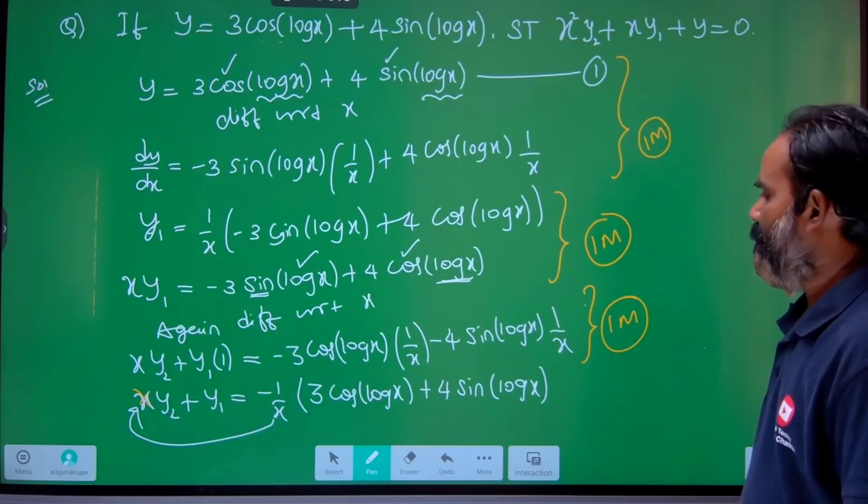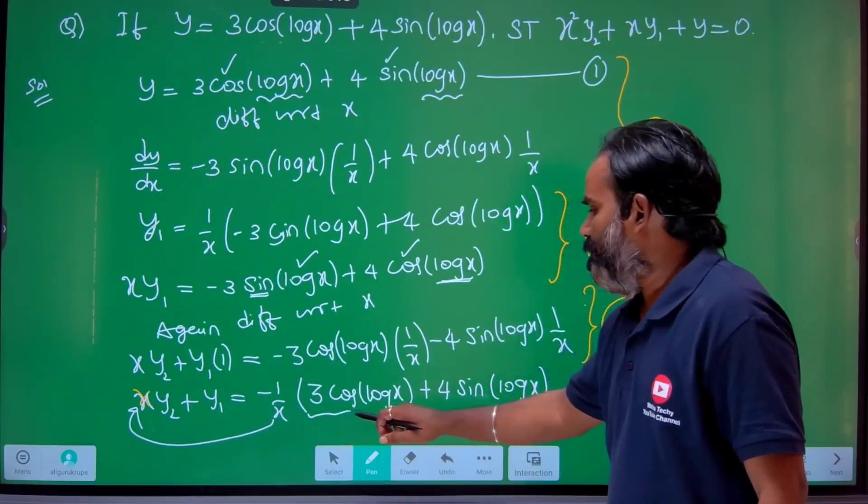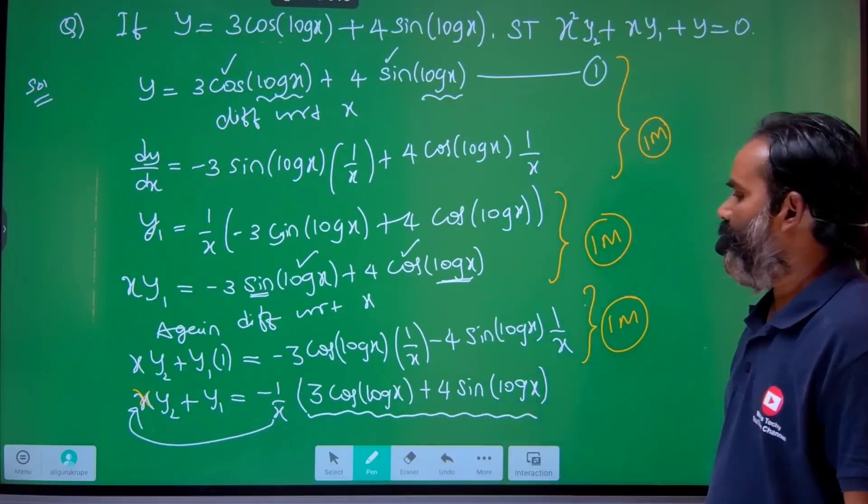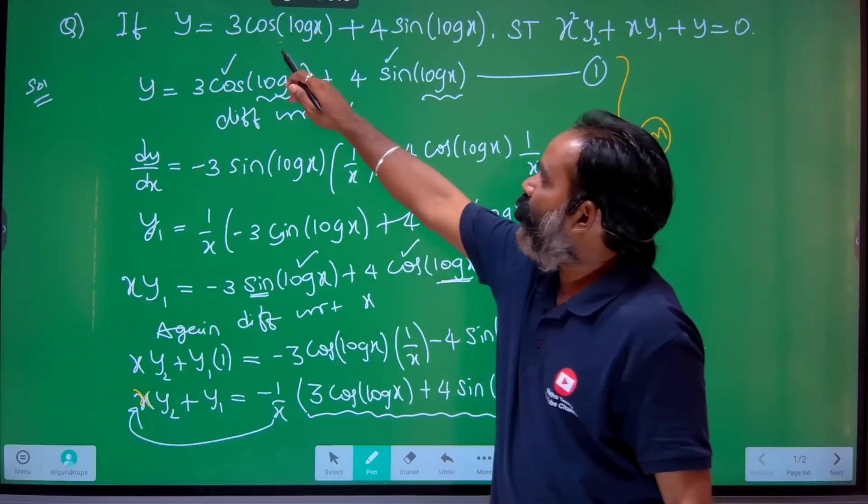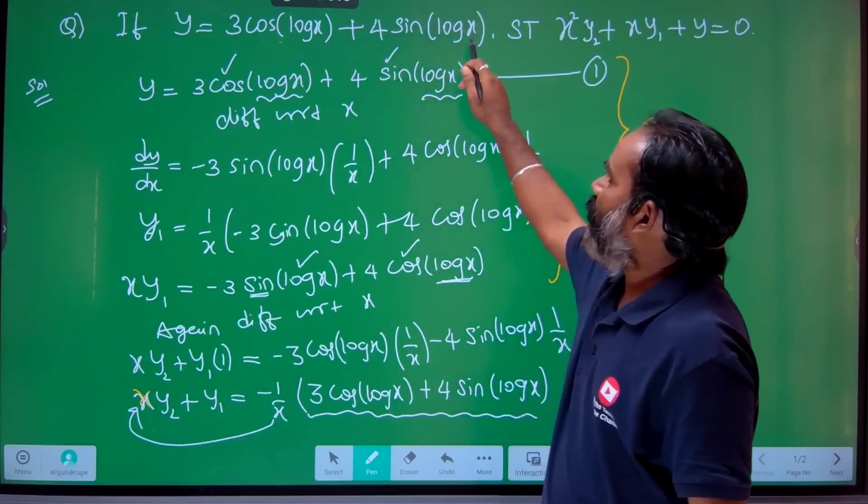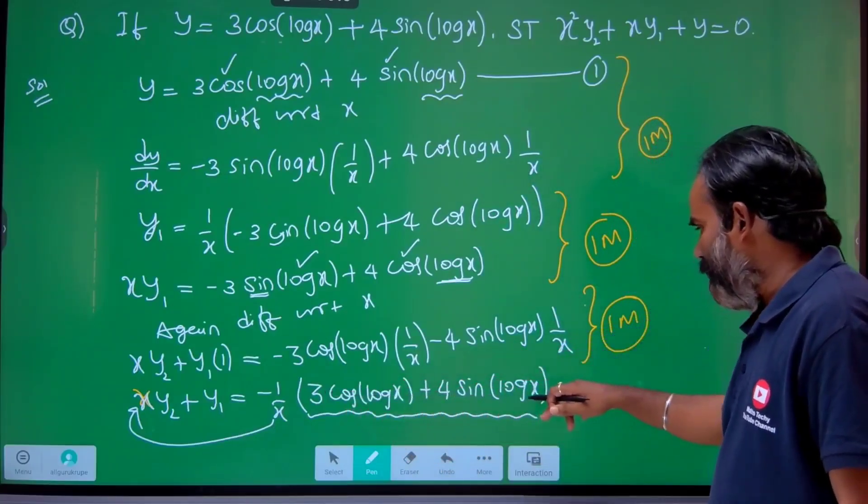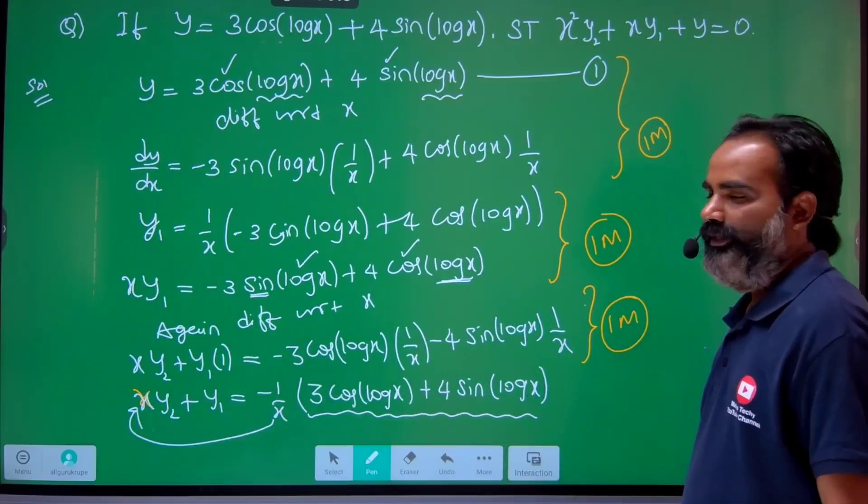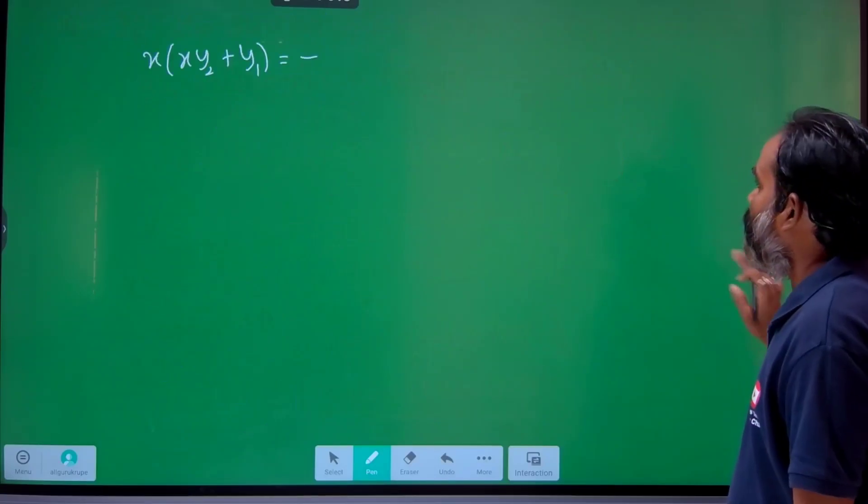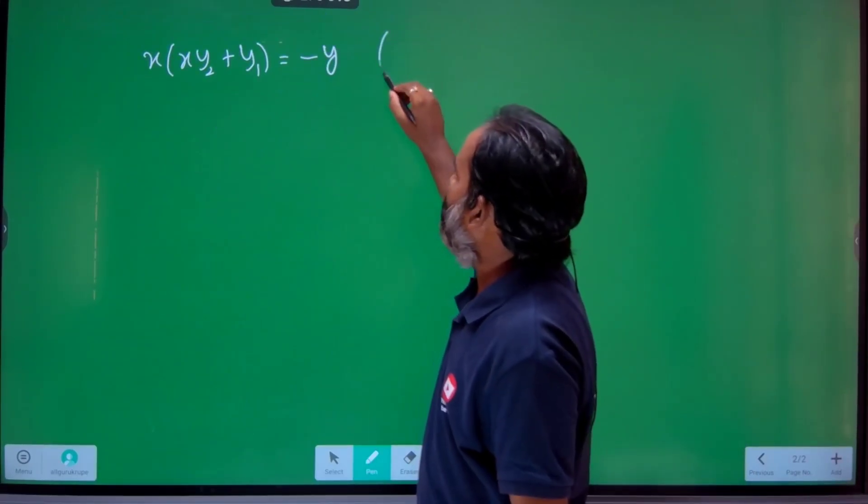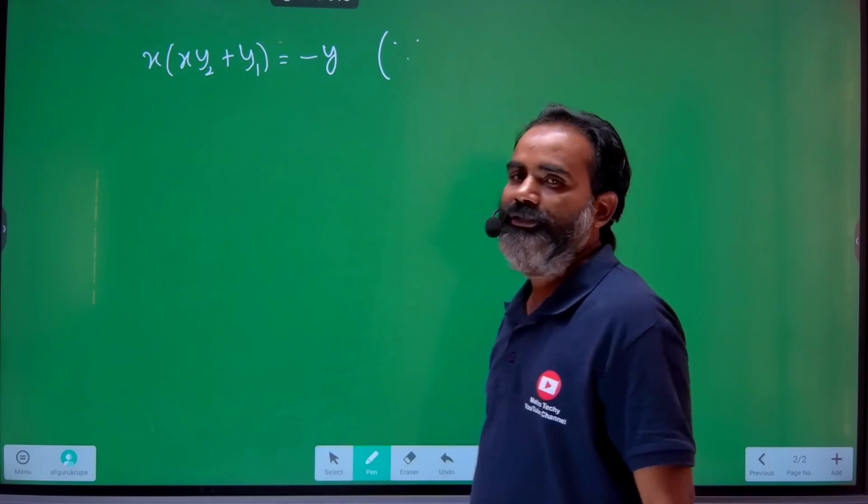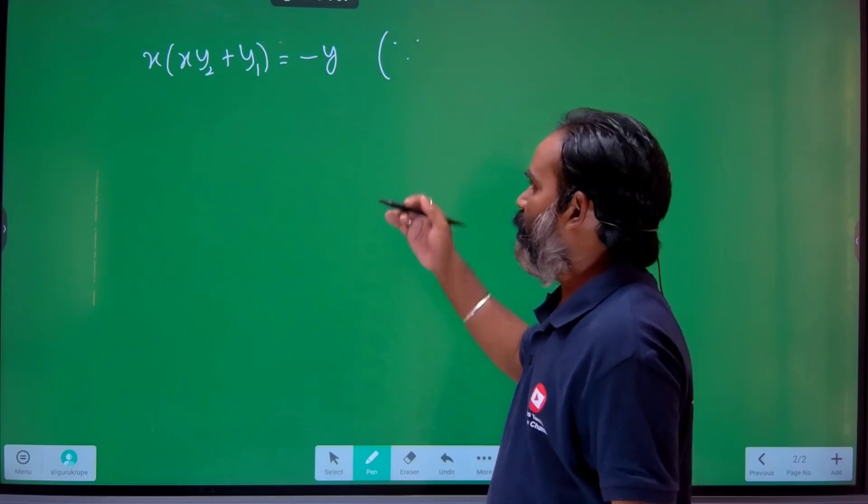This will be 3cos(logx) + 4sin(logx). It is equal to y, correct. The entire term equals y. Directly I will mention - this will be y. This substitution reasoning is very common practice in mathematics.